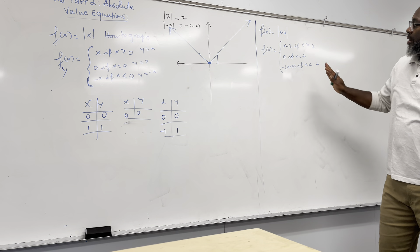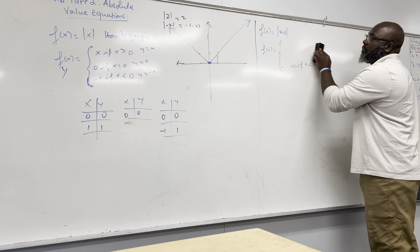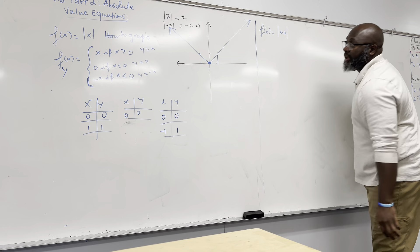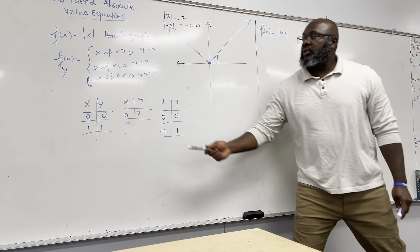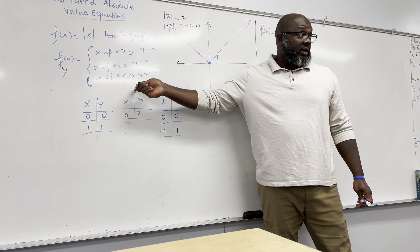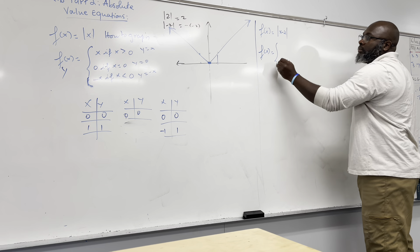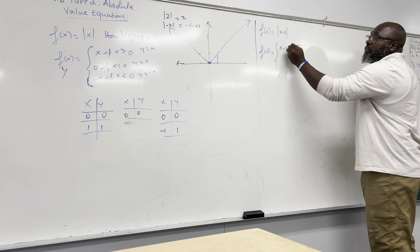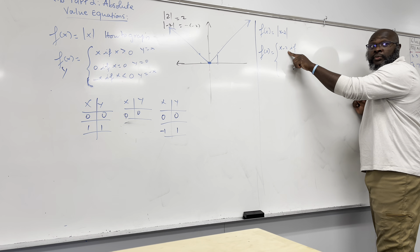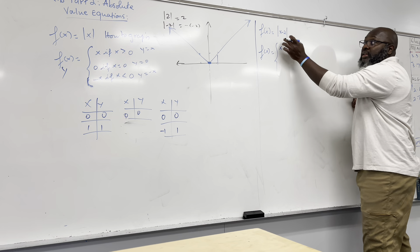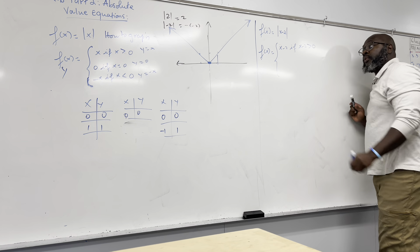So now I'm starting with absolute value of x minus 2. Suppose this is what I give you — graph this function. The first step is to build our piecewise component. Absolute value of x minus 2 equals x minus 2 if x minus 2 is greater than 0 — meaning x is greater than 2. Because if this whole expression inside is positive, the absolute value is positive.